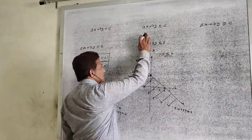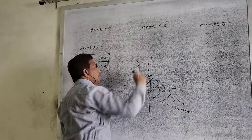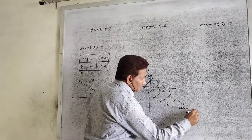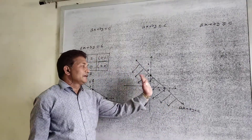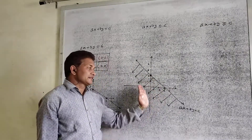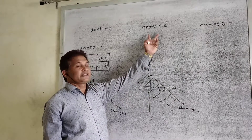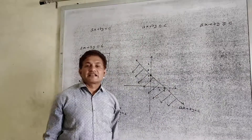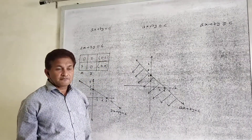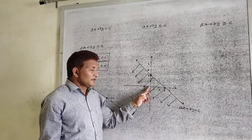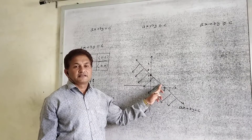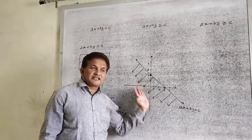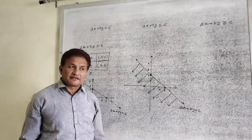In the general form, if the line is in the form Ax plus By less than or equal to C, then the set of all points below the line satisfy this equation. Hence this is your graphical representation of Ax plus By less than or equal to C. All the points which are on the origin side of the line form the solution set for the given inequality.